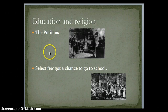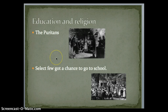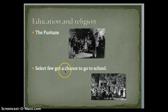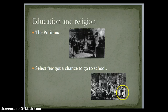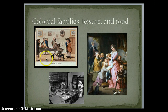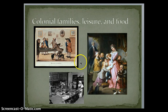I want to quickly talk about education and religion. A lot of people fled Europe for religious freedom. One of the groups we know are the Puritans, and they were seeking religious freedom when they came from Europe to the United States. A select few had a chance to go to school — not many people went to school, but those who were a bit more wealthy were generally able to be educated. Looking at colonial families, leisure, and food: generally the men were in charge of the households.